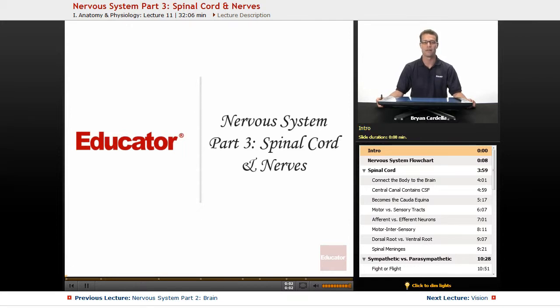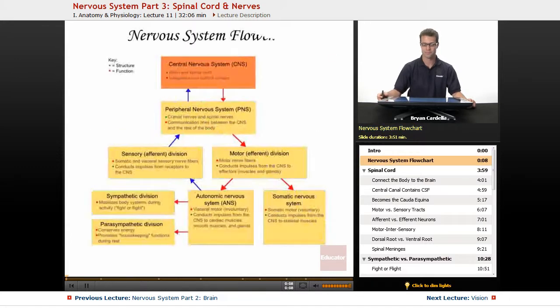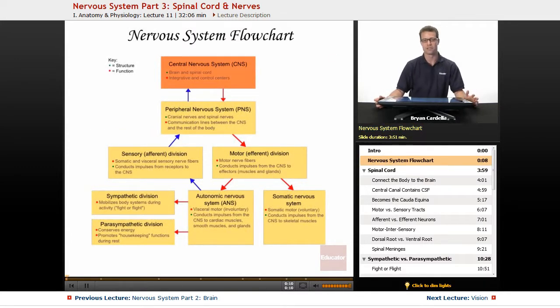Hi, welcome back to Educator.com. This is the next nervous system lesson, specifically on the spinal cord and nerves. If we were to look at the nervous system as a giant flow chart that had to do with the brain, the spinal cord, and all the nerves, this is a very good representation.